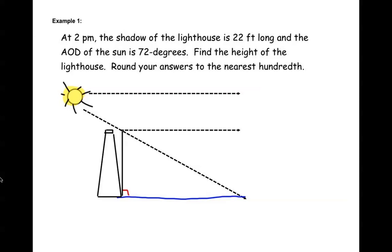This first example — here is your diagram. You have a lighthouse with a shadow that is 22 feet long, so we're going to label this 22 feet. The angle of depression of the sun is going to go down from your line of sight, so that angle is going to be considered 72 degrees. We're going to find the height of the lighthouse, and we'll call that x. We want to round all of our answers to the nearest hundredth.